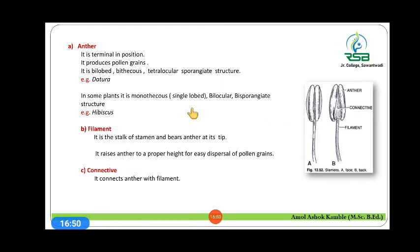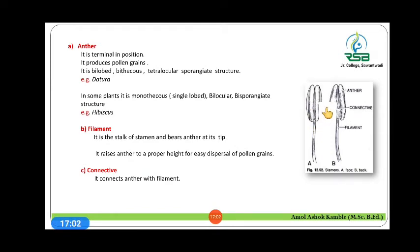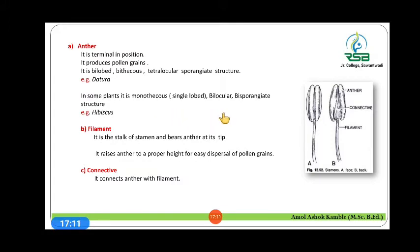In some plants the anther is monoecious, bilocular and bisporangiate, meaning one lobe with two chambers. This is present in Hibiscus. So in every plant the nature of the anther is different; it depends on the lobes of that anther.